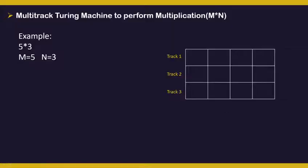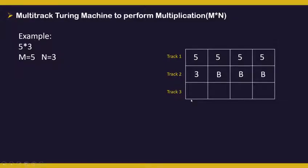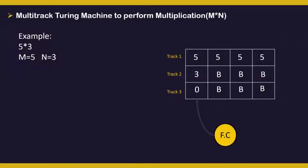Let us take an example. If we want to multiply 5 with 3, we take m = 5 and n = 3. Step 1 is to place m, that is 5, in track 1. Step 2, we place n in track 2 followed by blanks, and we place 0 initially in track 3 followed by blanks. Initially the final controller points to 5, 3, 0. We don't make any change in the first column and we move rightward.